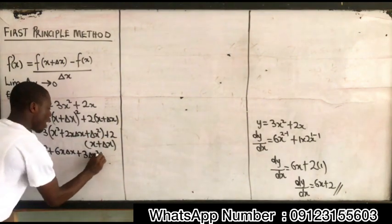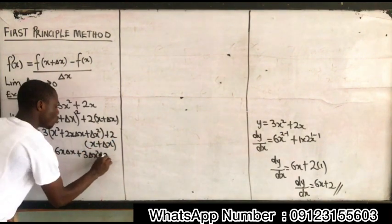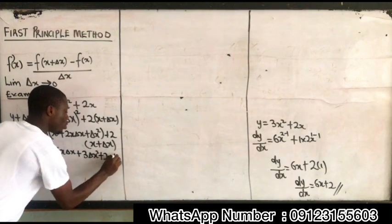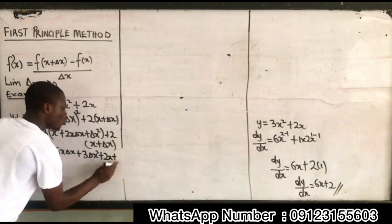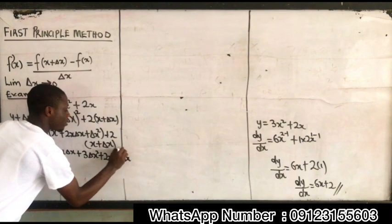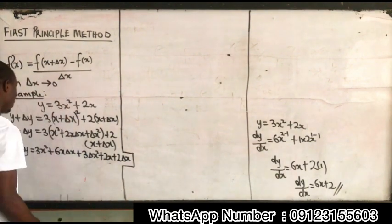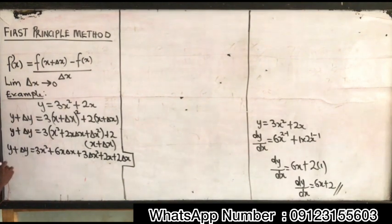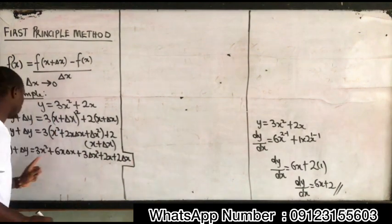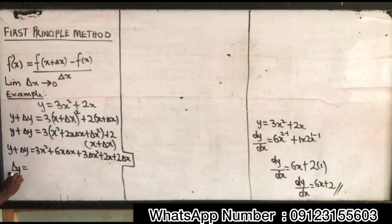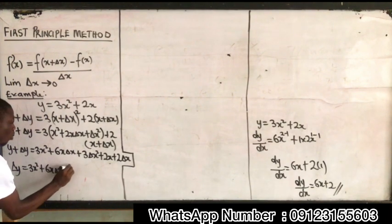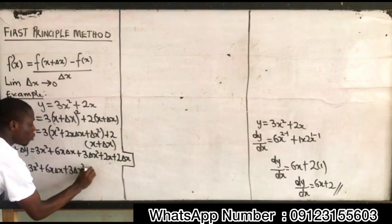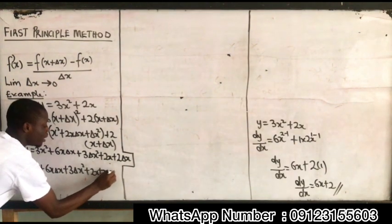Continuing the expansion: y plus change in y is equal to 3x squared plus 6x change in x plus 3 change in x squared, plus 2x plus 2 change in x. Now I take y to the other side. Since y originally was 3x squared plus 2x, my change in y is equal to 3x squared plus 6x change in x plus 3 change in x squared plus 2x plus 2 change in x.